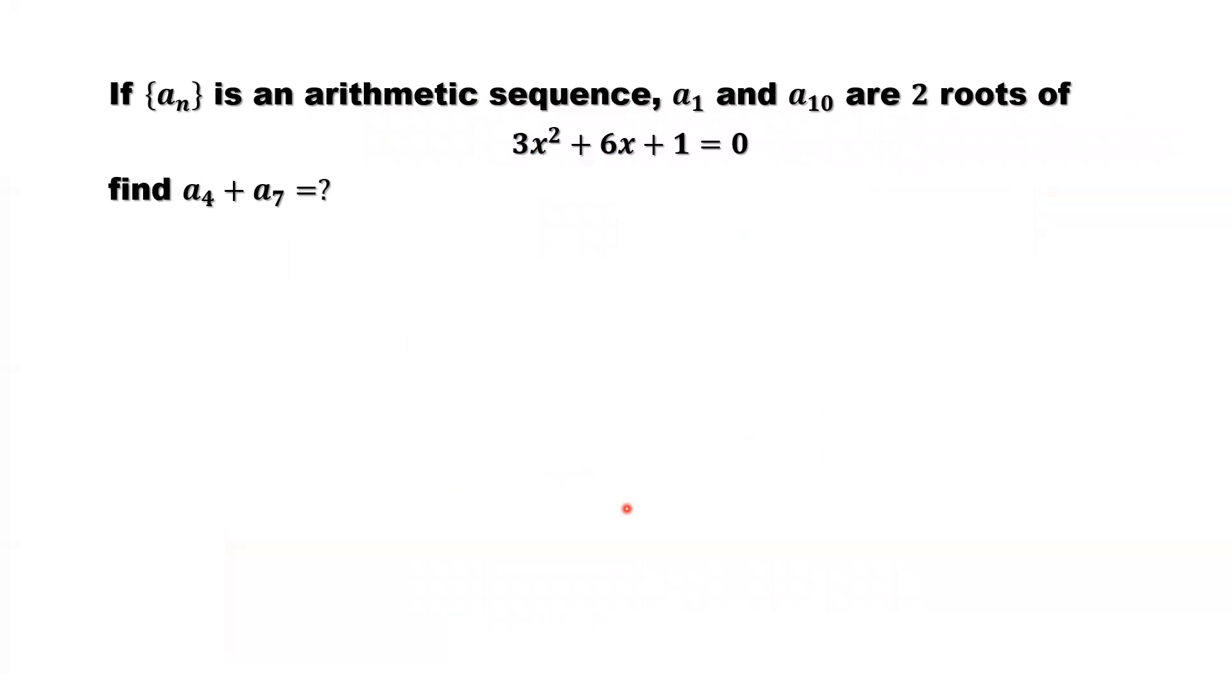What are given? An is an arithmetic sequence. The first term and the tenth term are two solutions for this quadratic equation.